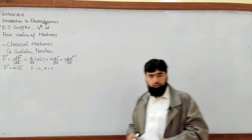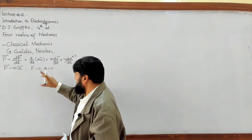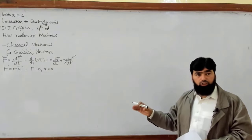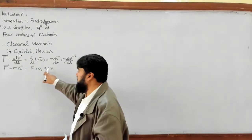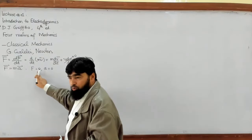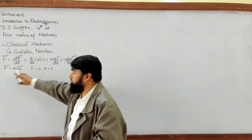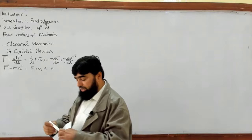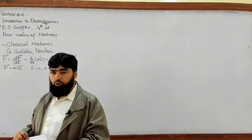When force equals zero, acceleration A equals zero. A can be zero in two situations: either a body is at rest, or a body is moving with a constant velocity. Not just constant speed — constant velocity — because velocity includes both magnitude and direction. If speed is constant but direction changes, acceleration will not be zero. So in the absence of force, a body moves at constant velocity or remains at rest — this is the first law, derivable from the second.